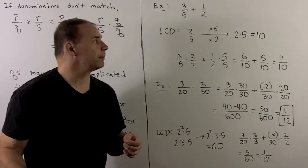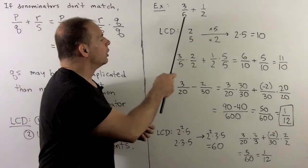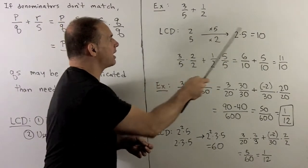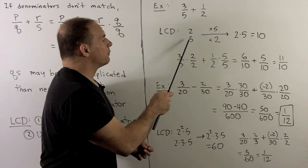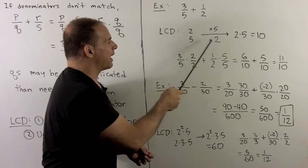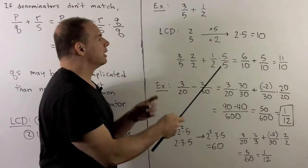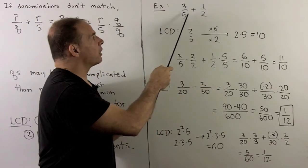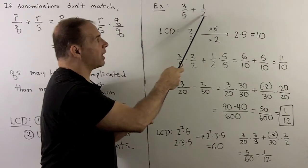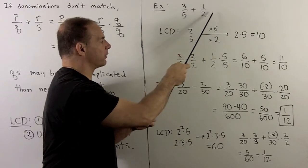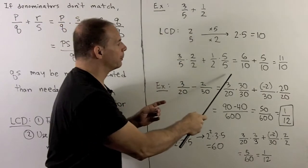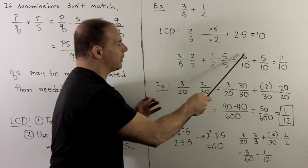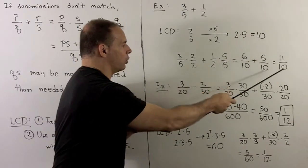To add 3/5 and 1/2 using LCD = 10: for the denominator 2, what's missing to get to 10 is a factor of 5; for the denominator 5, what's missing is a factor of 2. So for 3/5 we multiply by 2 over 2, and for 1/2 we multiply by 5 over 5. Now we're over a common denominator of 10, we add the numerators, and we get our answer: 11 over 10.